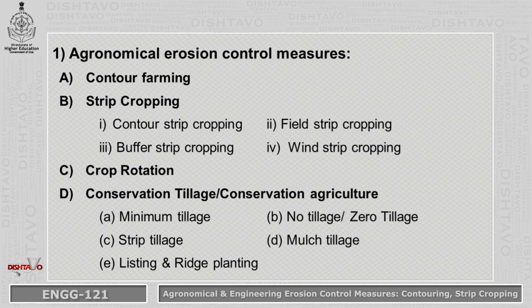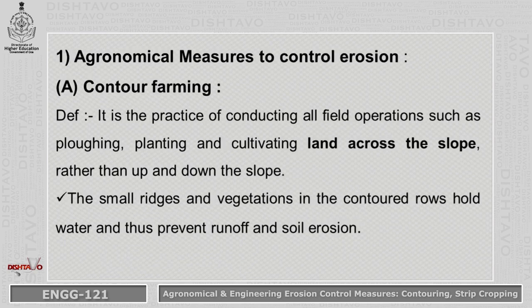In Agronomical Erosion Control Measures, there are different measures like Contour Farming, Strip Cropping, Crop Rotation, and Conservation Tillage or Conservation Agriculture. We will discuss all these one by one. Agronomical Erosion Control Measures are the first line of defense, while Engineering Erosion Control Measures are the second line of defense.